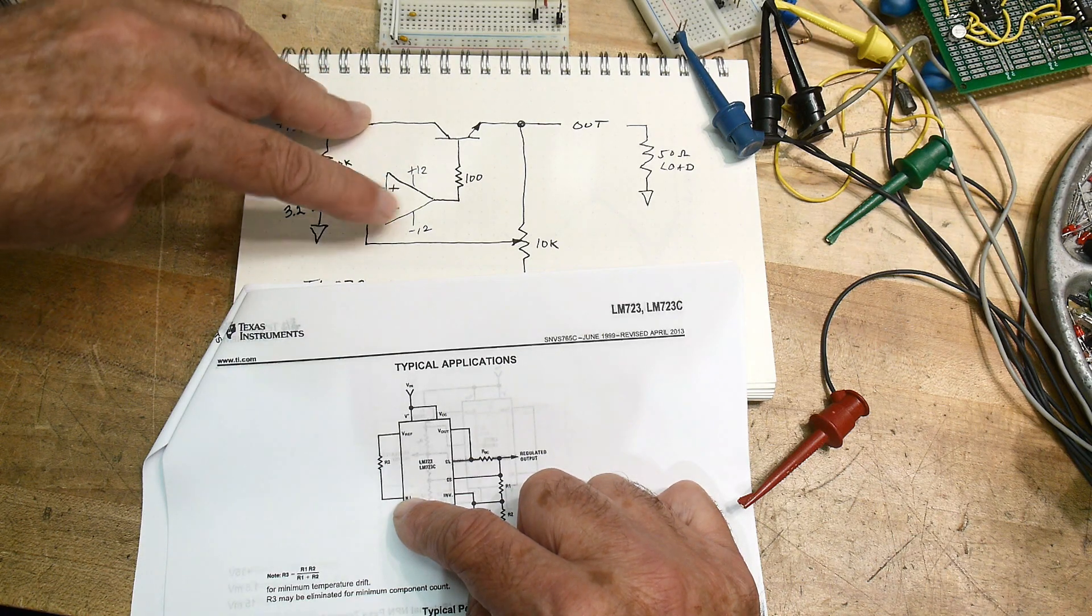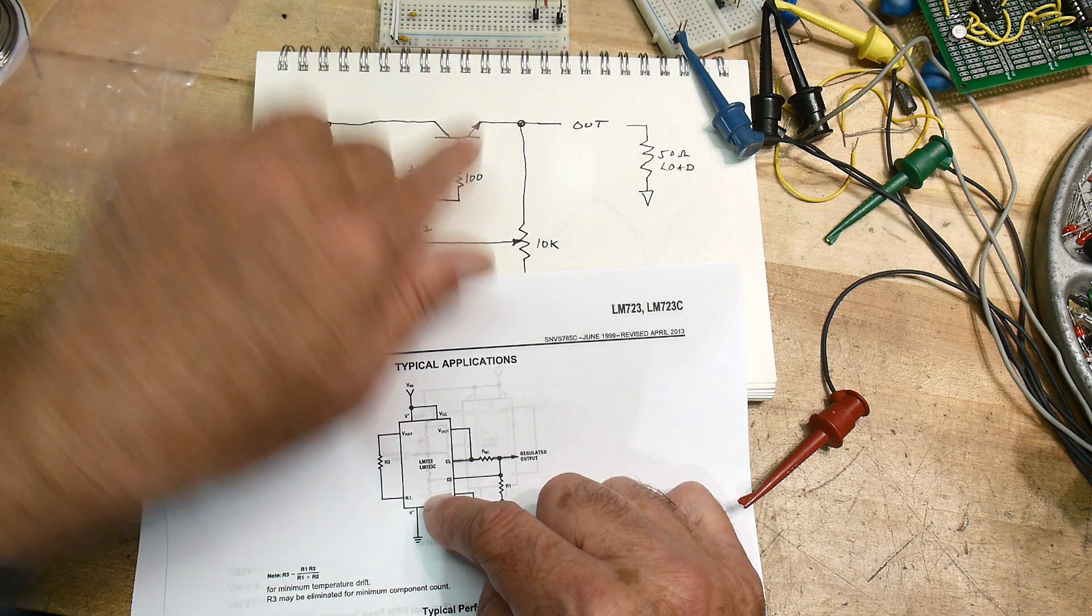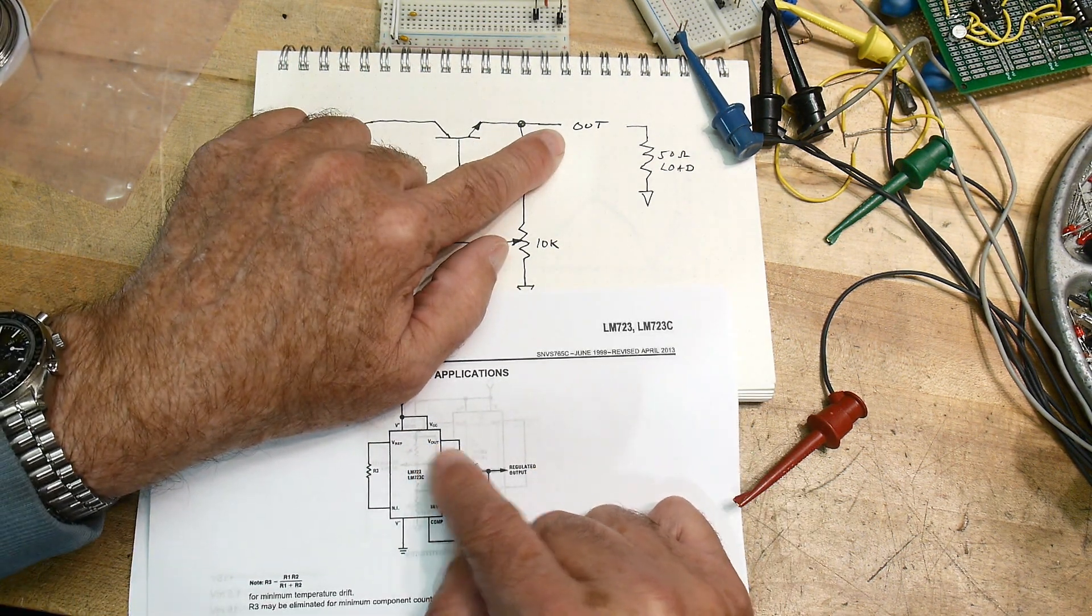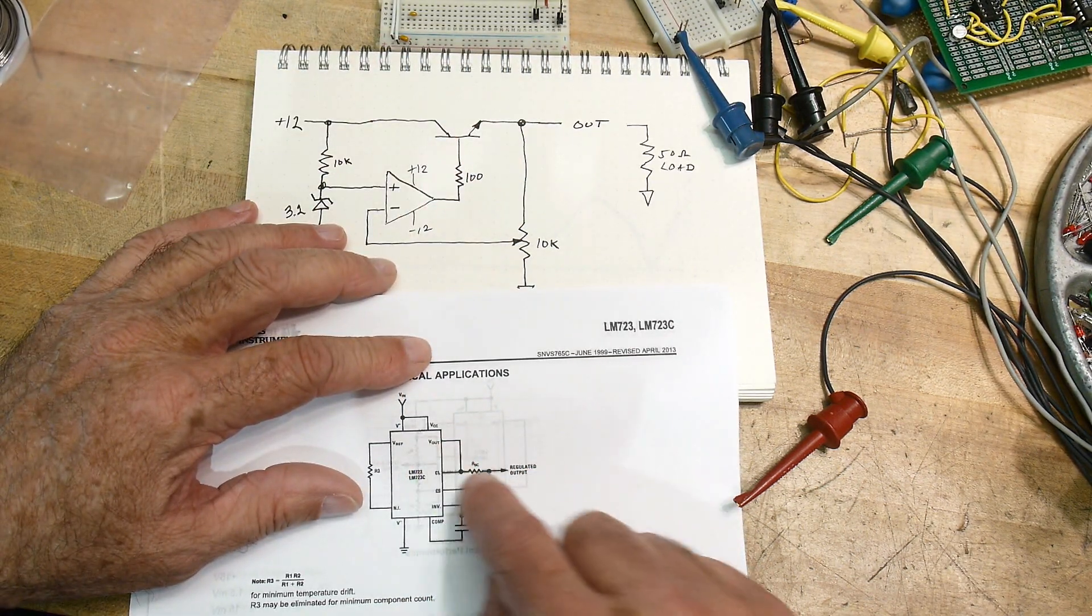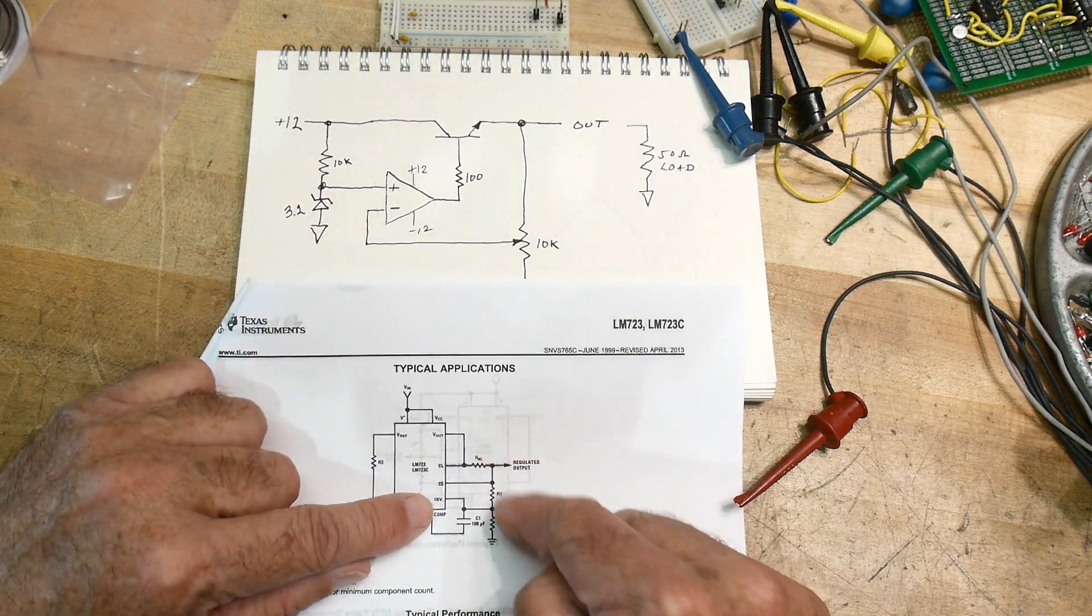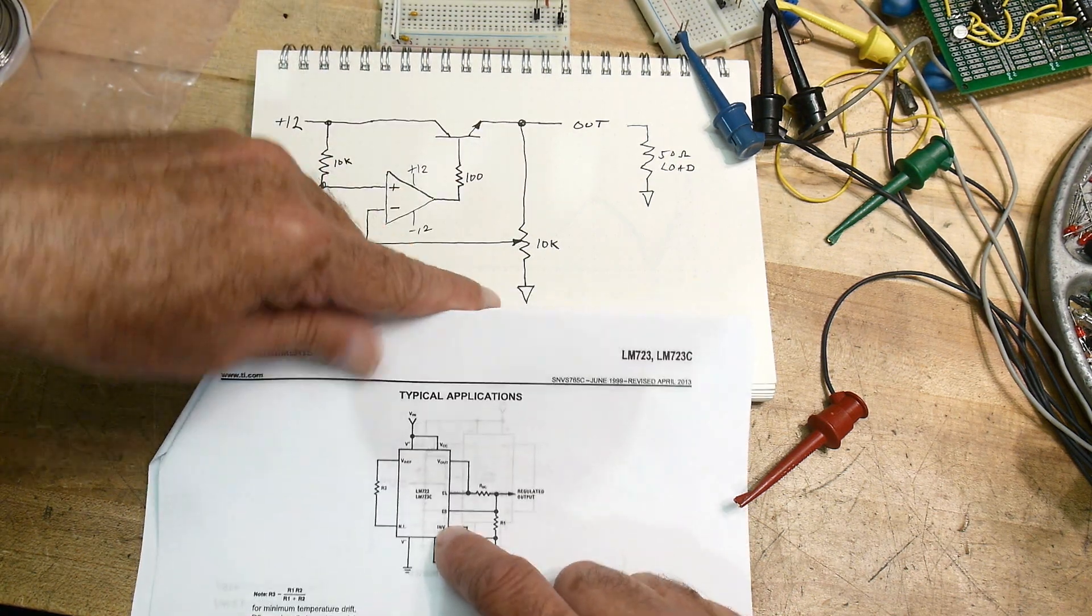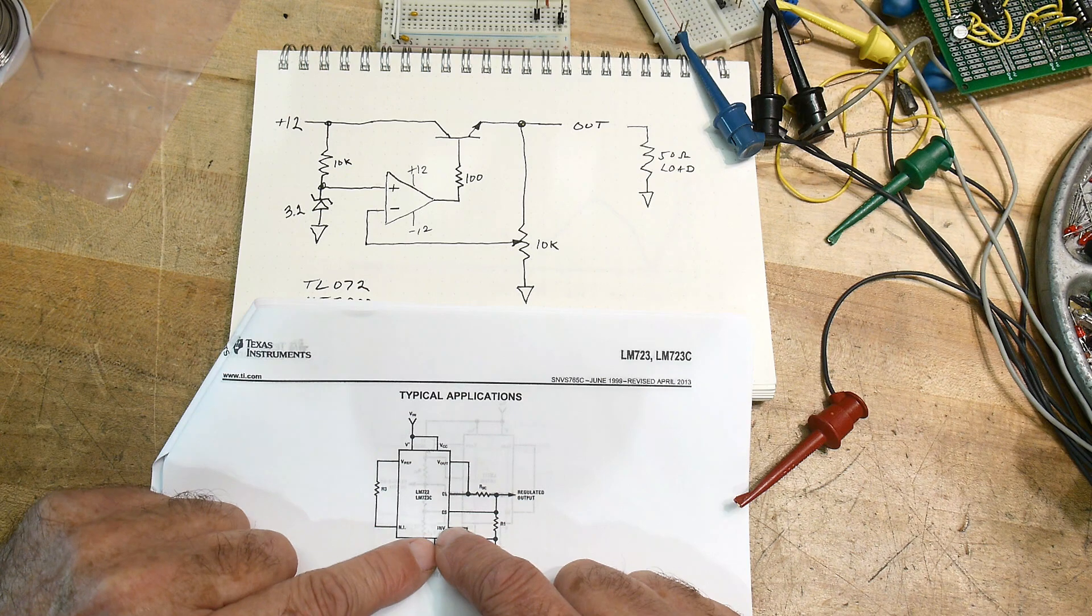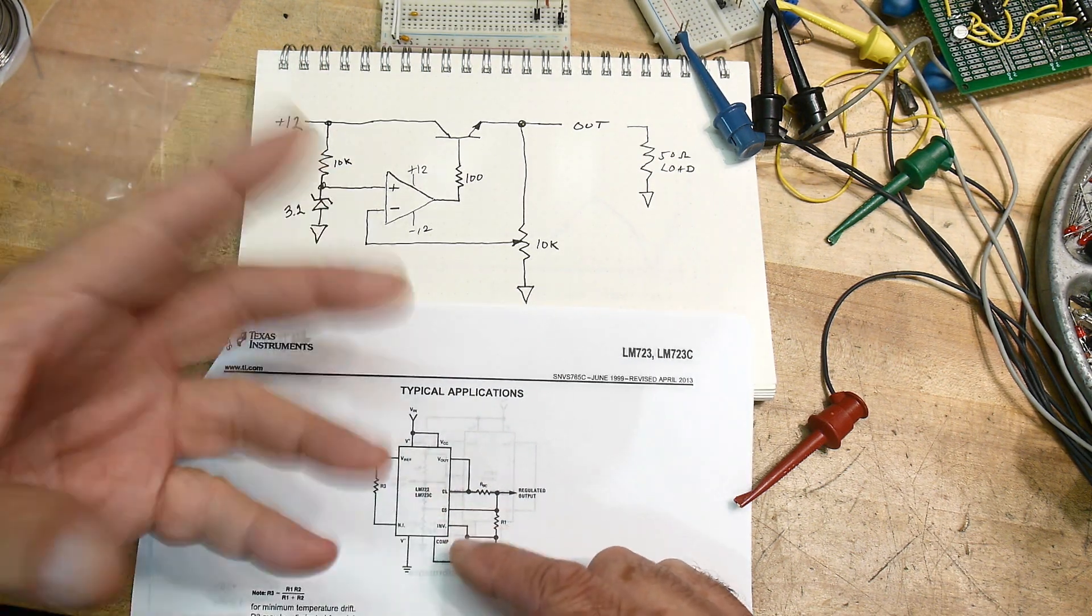We're going to feed that back into the non-inverting part of the amplifier. So zener diode comes out, we're going to bring that into the non-inverting, the plus, and then this transistor is inside and that's going to be our V out. So take our V out and then remember I had a voltage divider here.